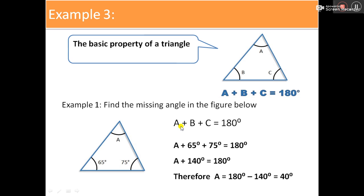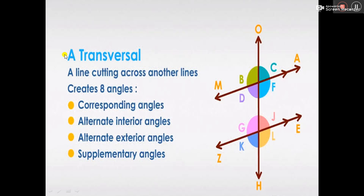We have A plus 65 plus 75 degrees, which should sum up to 180 degrees. So 65 plus 75 will give us 140. So for us to find A, we have to take this over to the other part. So we have 180 minus 140 to give us 40. So when we place 40 here and sum up everything together, it will sum up to 180.